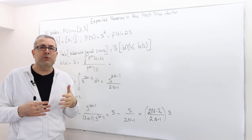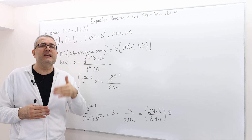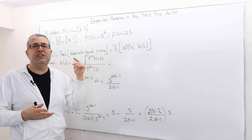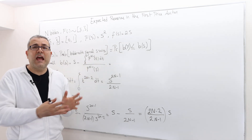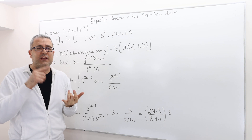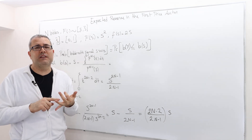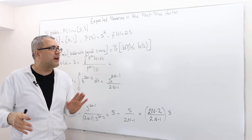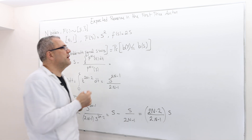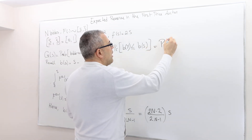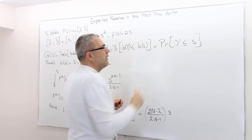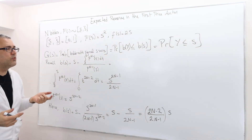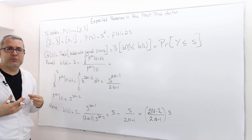That is in fact no different from the g function we calculated in the second price auction, where every bidder was bidding his signal. The bidding function b is not going to change anything in our calculations, and therefore the expected payment, ex-ante expected payment, and expected revenue will be the same. But let me show this explicitly by calculating the bidding function in the first price auction.